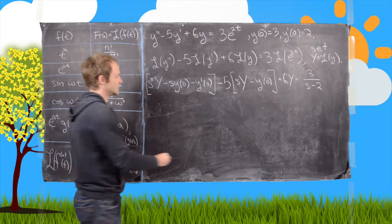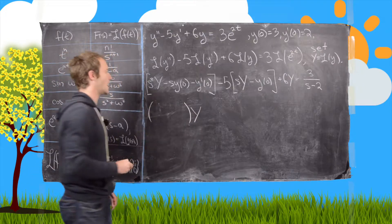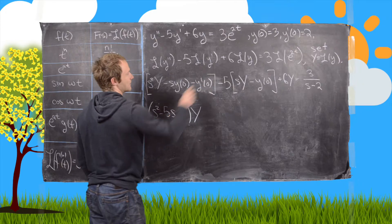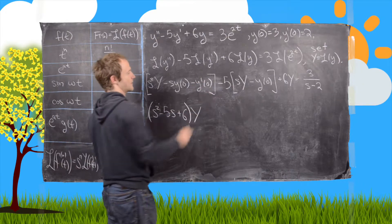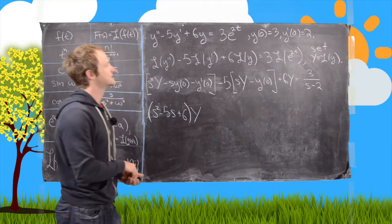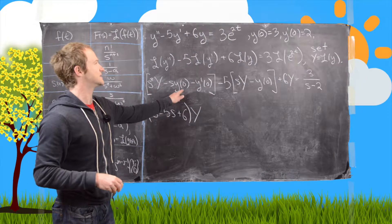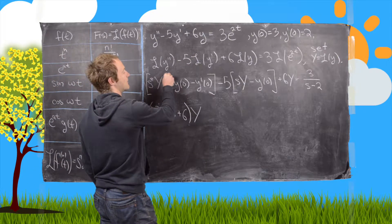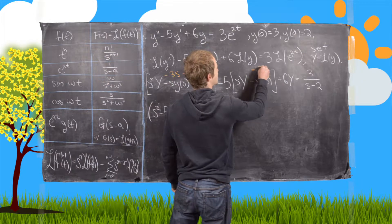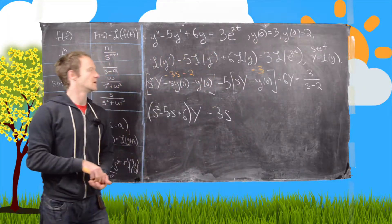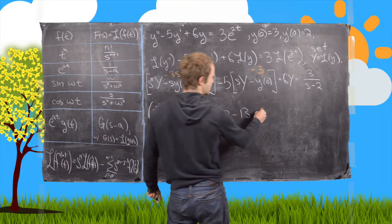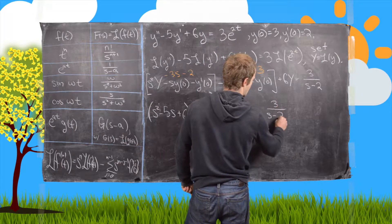Now let's combine like terms. We've got a bunch of terms with capital Y on the left-hand side: s squared from the first term, minus 5s from the middle term, and plus 6 from the last term. The initial conditions give us the remaining values — this is going to be minus 3s minus 2, and minus 3 from that initial condition. Subtracting 2 and adding 15 gives us minus 13, so we have equals 3 over s minus 2.